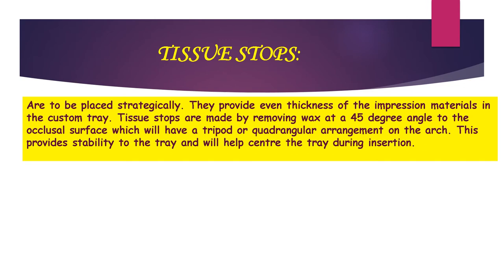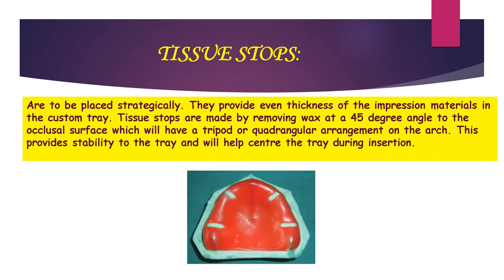Next is tissue stops. They are to be placed strategically and provide even thickness of the impression material in the custom tray. The tissue stops are made by removing the wax at a 45-degree angulation to the occlusal surface, and they have a tripod or quadrangular arrangement on the arch. This provides stability to the tray and helps center the tray during insertion.